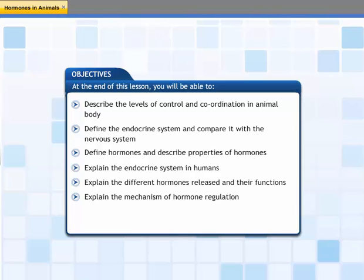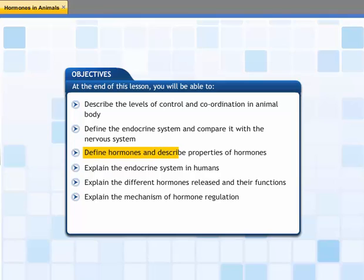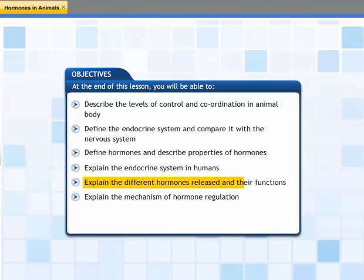In this lesson, you will learn about the endocrine system in animals. At the end of this lesson, you will be able to: describe the levels of control and coordination in the animal body; define the endocrine system and compare it with the nervous system; define hormones and describe properties of hormones; explain the endocrine system in humans; explain the different hormones released and their functions; and explain the mechanism of hormone regulation.